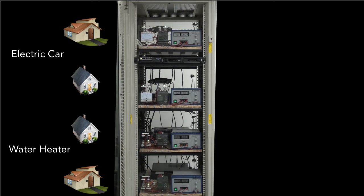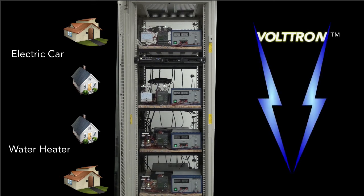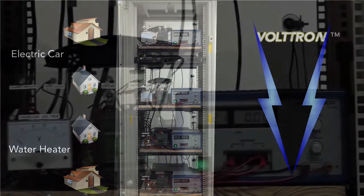The following example shows Voltron interacting with actual hardware to demonstrate a simple scenario of agents running in Voltron. The Voltron hardware testbed emulates a neighborhood of four houses, each with either a water heater or an electric vehicle charger.